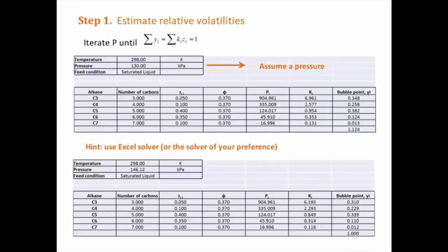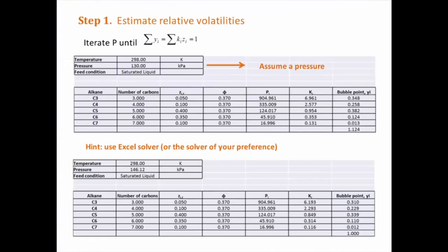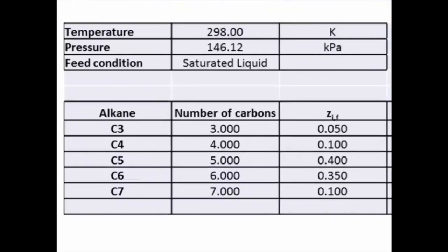The procedure to estimate the bubble point pressure of a mixture is first assume a pressure and estimate the K values of the hydrocarbon mixture. Then we need to make sure that the sum of the products between the K values and the feed composition is equal to 1. You can do this iteration manually or else you can use any solver, for example the Excel solver. In this case, the pressure that satisfied that condition was 146.12 kPa.